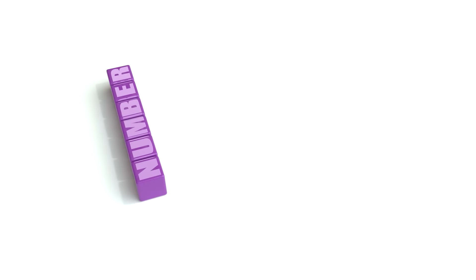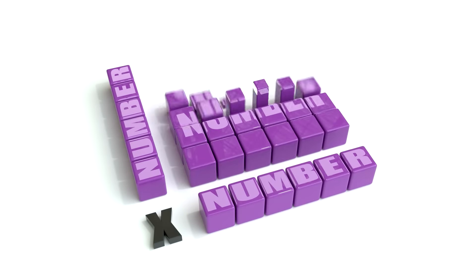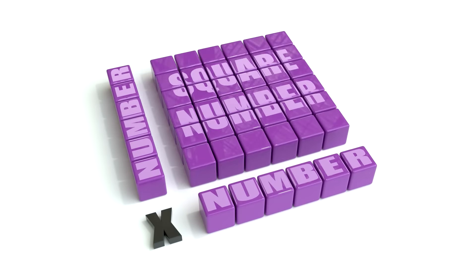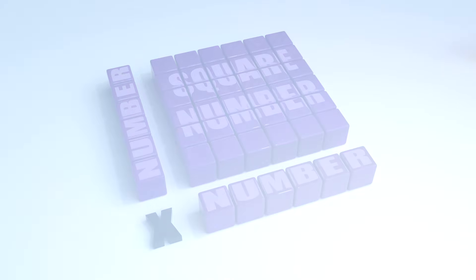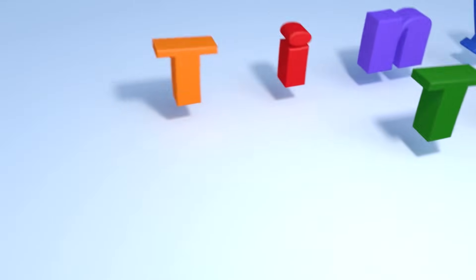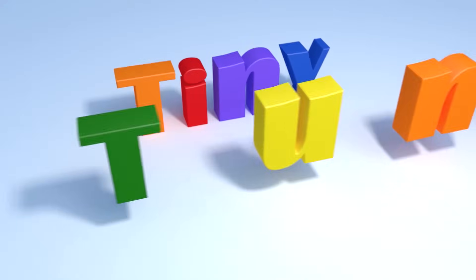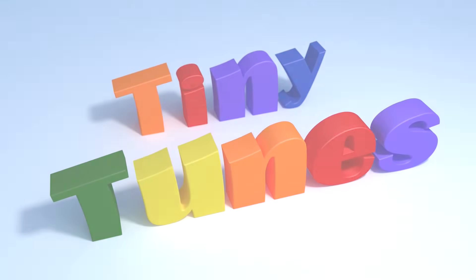Multiplying a number by itself, you get a square number.